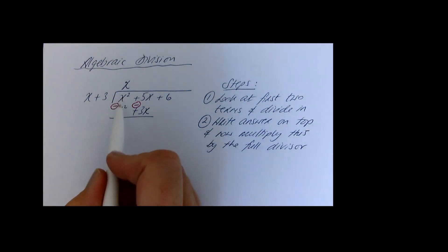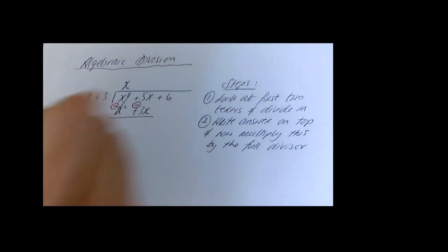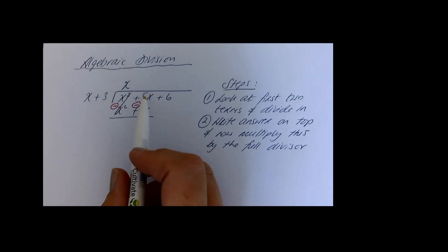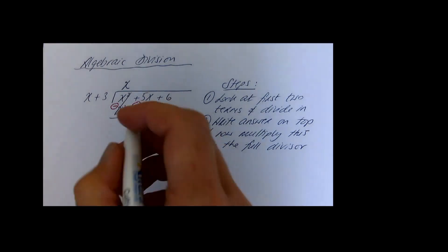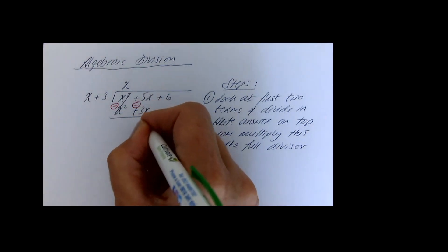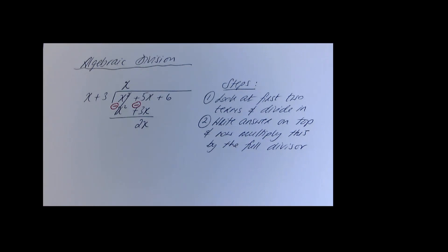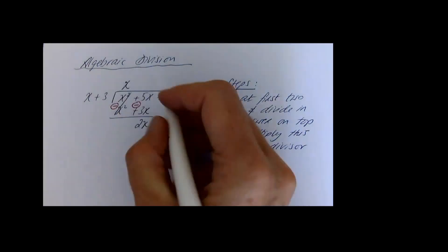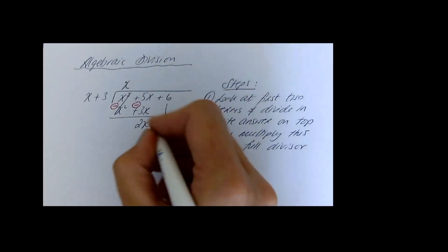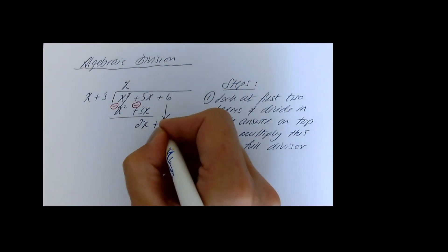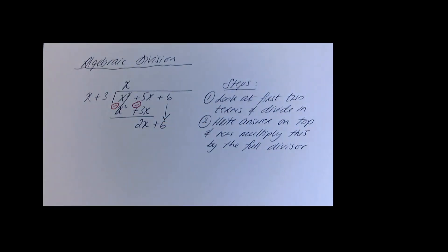x squared take away x squared cancels — which is what you want when you're on the right track. The remainder is 5x take away 3x, which is 2x. Then bring down the next term and repeat your steps.